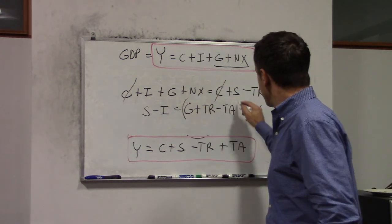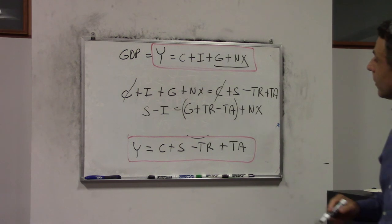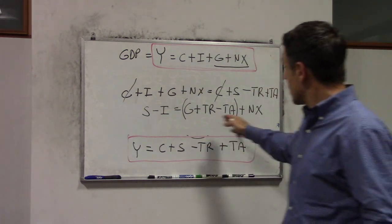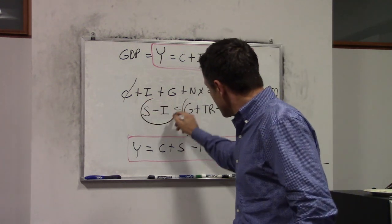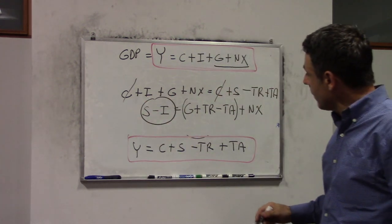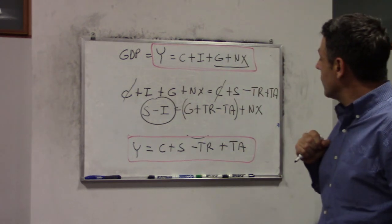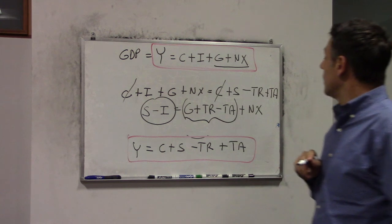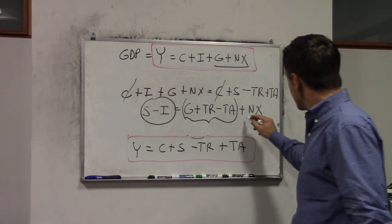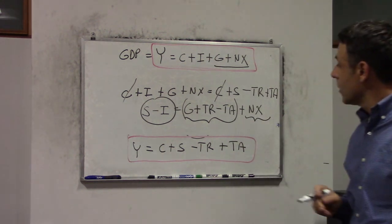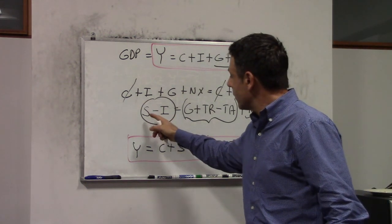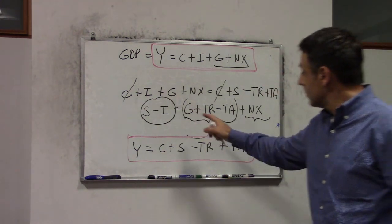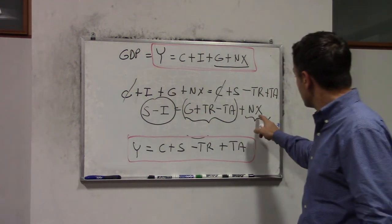You can notice that the implications of this formula are quite interesting. Basically, we are saying that everything that is left over from the saving after we subtract the investment goes to finance the budget of the government and the rest of the world. In other words, we have to finance investments, the budget of the government, and the rest of the world.